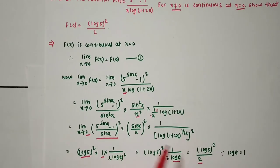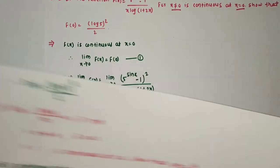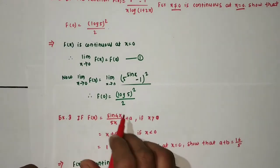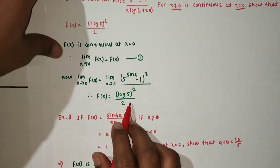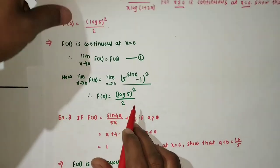This equals (log 5)² / 2, which is f(0). Hence we can say that f(0) = (log 5)² / 2.